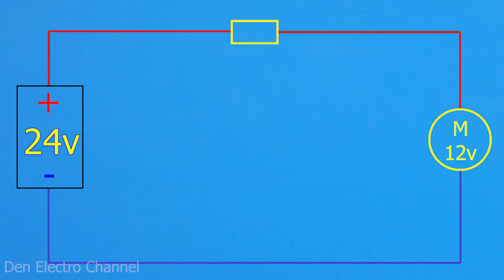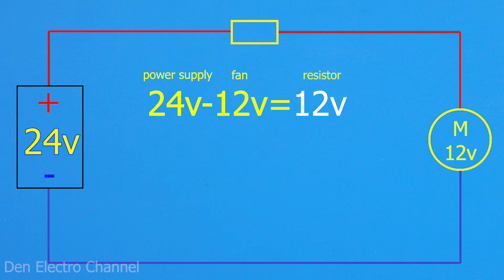Let's do a simple calculation. From 24 volts we subtract 12, this is the fan voltage, and we get 12 volts. These 12 volts must be extinguished by a resistor.